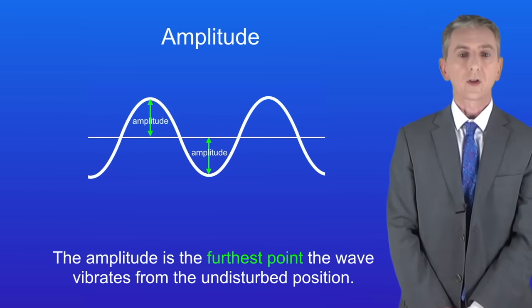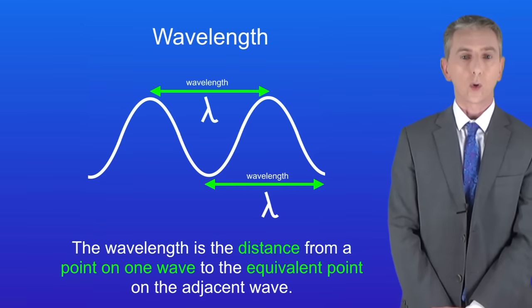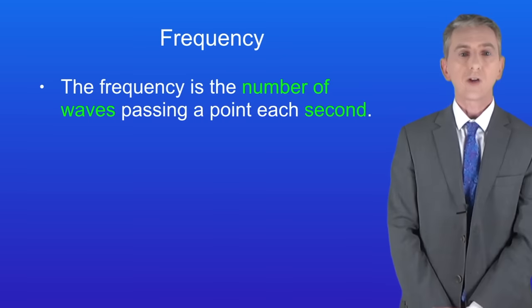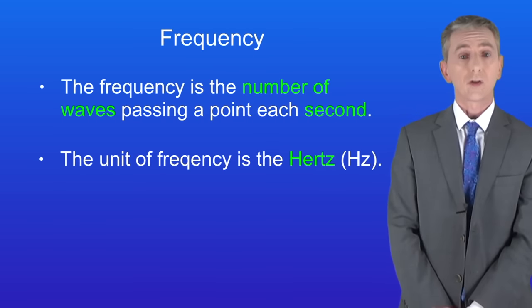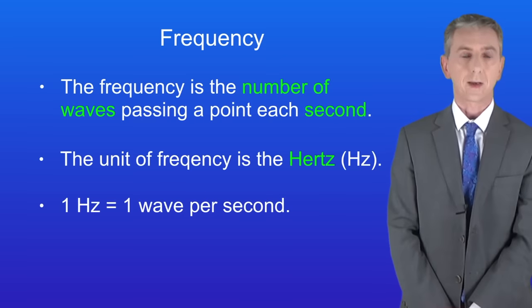Remember that the amplitude is the furthest point the wave vibrates from the undisturbed position. The wavelength is a distance from a point on one wave to the equivalent point on the adjacent wave, and the frequency is the number of waves passing a point each second, and the unit of frequency is the Hertz. Remember that one Hertz is one wave per second.